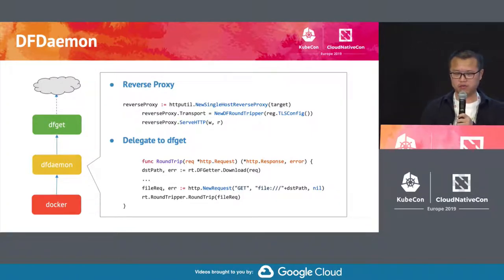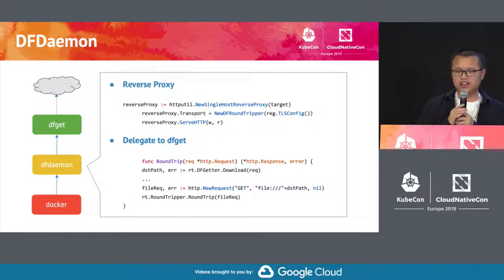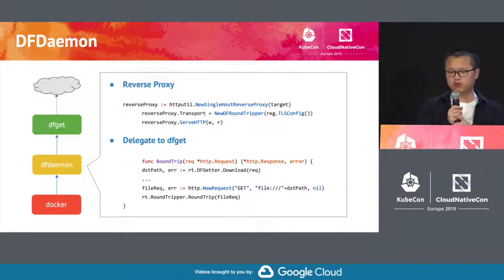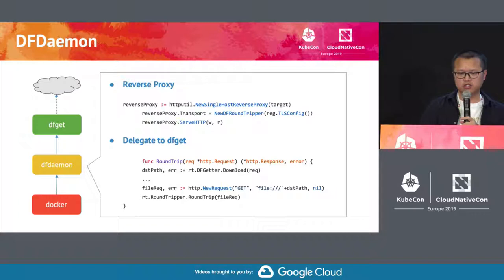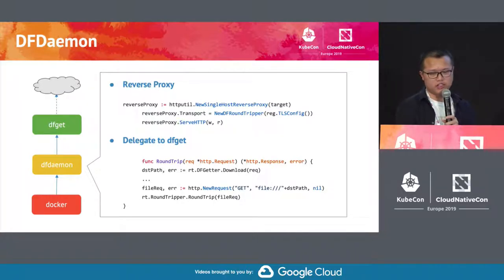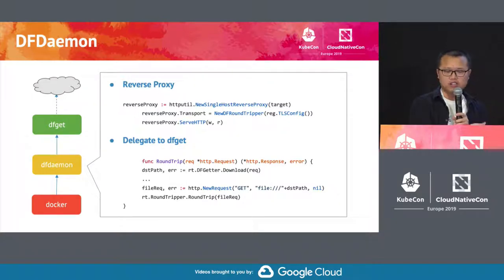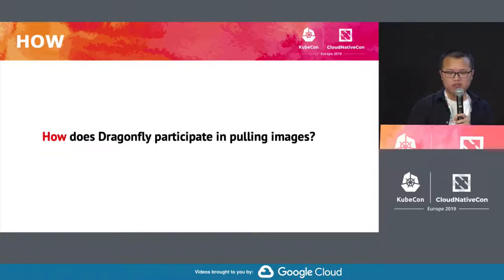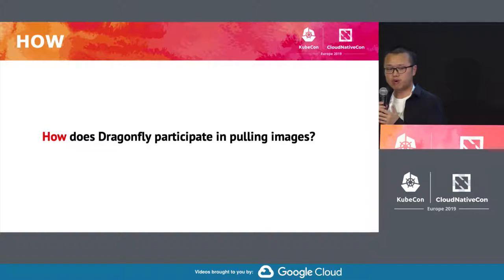And if you can control the source code of your registry service, you can add a redirection: instead of downloading from storage, you can redirect to a proxy. And DFDemon is such a proxy which Dragonfly has. DFDemon is simply a reverse proxy. Actually, in Golang, it's pretty convenient — you can construct a reverse proxy in a single line of code. In that case, we override the transport, which basically invokes dfget to download the file, and then serves the file to the Docker daemon.